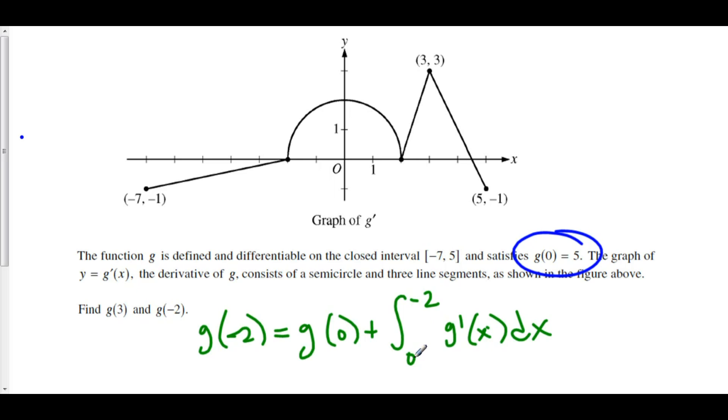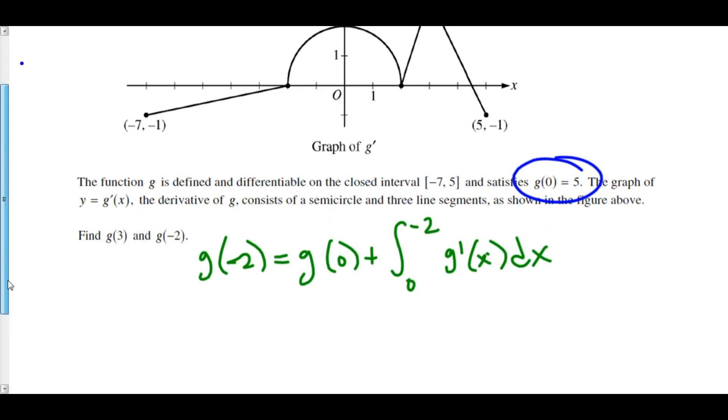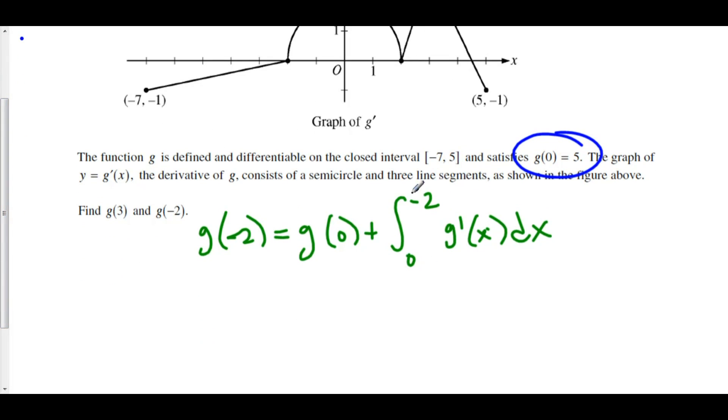Well, here we have 0 to negative 2. That's going from right to left. To go from left to right, of course, we can just flip our limits of integration and we get g of 0 minus the integral from negative 2 to 0 of g prime of x dx.